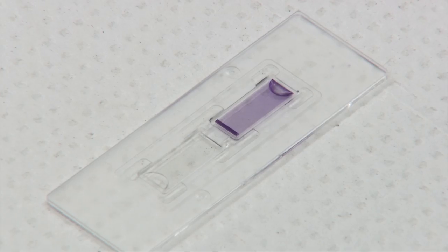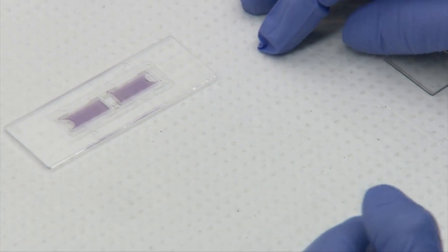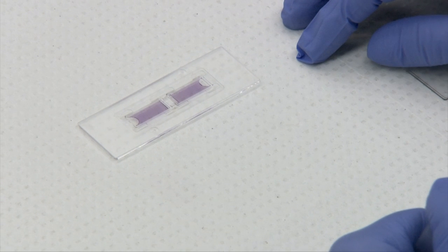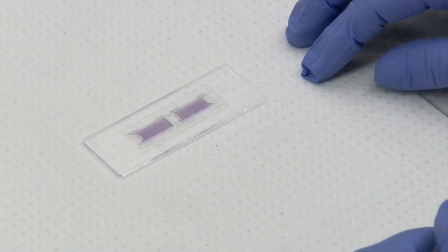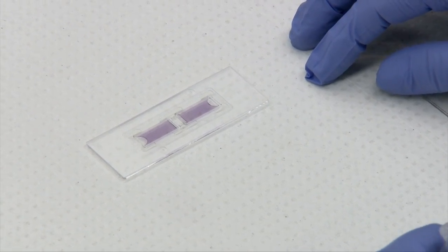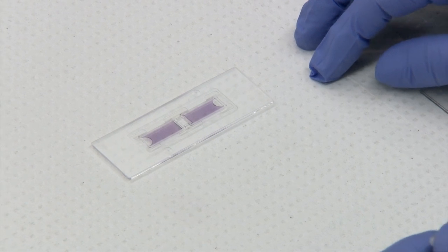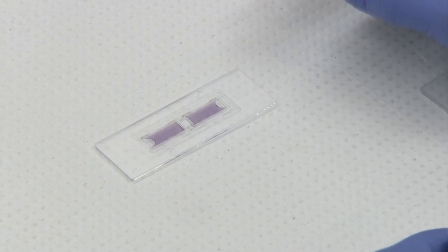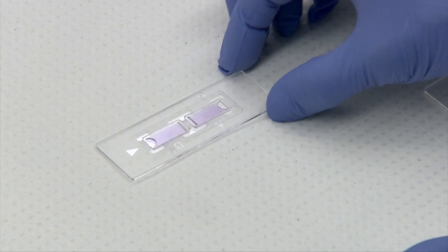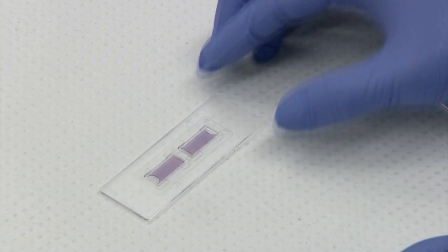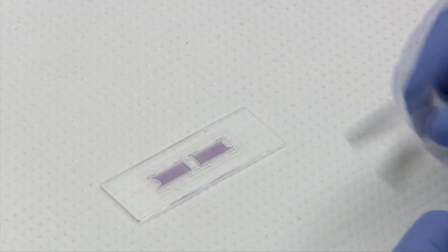Once you have filled your two sides, the hemocytometer should sit for three minutes and that allows the cells to settle into a single plane prior to counting. If you're going to be delayed, it's a good idea to put them in a moistened petri dish or some such tupperware container just to prevent evaporation of your dilution.